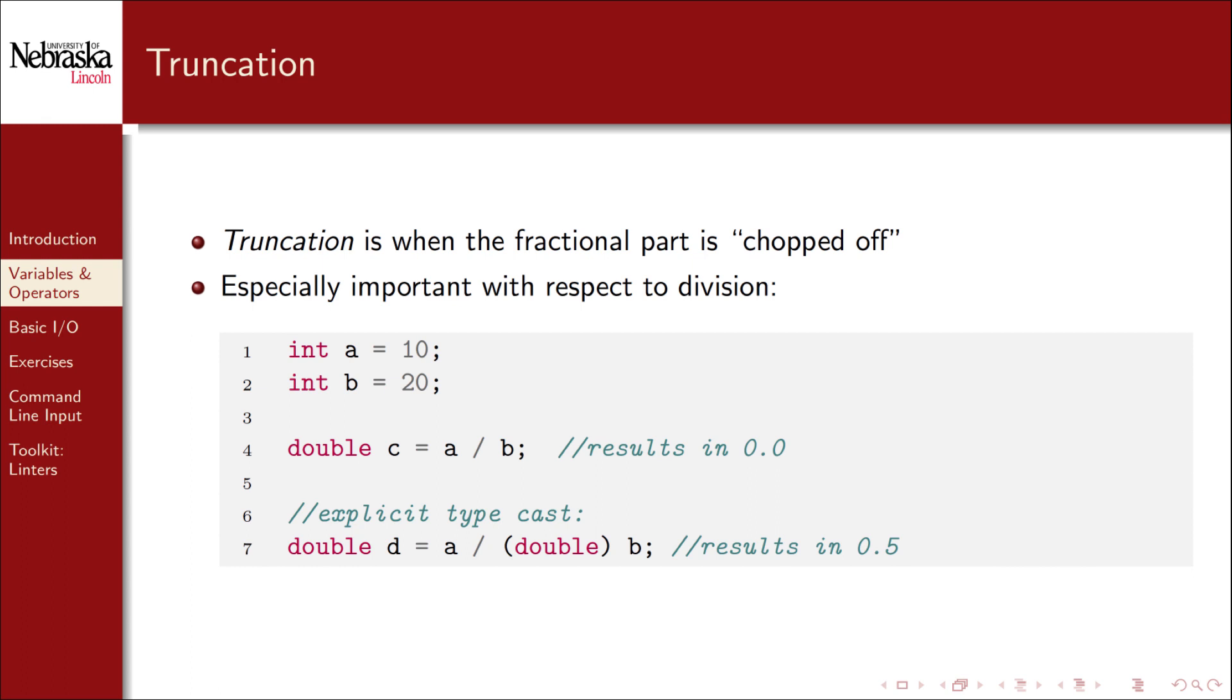Consider the following example. We have integer variables with values 10 and 20 respectively. When we go to divide them, the result should be 0.5. But an integer divided by an integer results in an integer. Thus the fractional part is truncated and lost. Even though the c variable is a double variable, the result of the division is still truncated and c gets the incorrect value, 0.